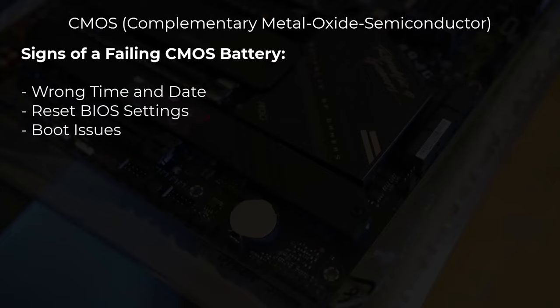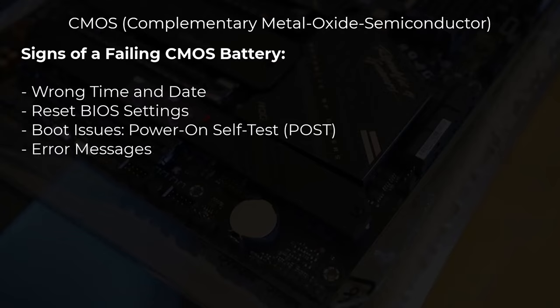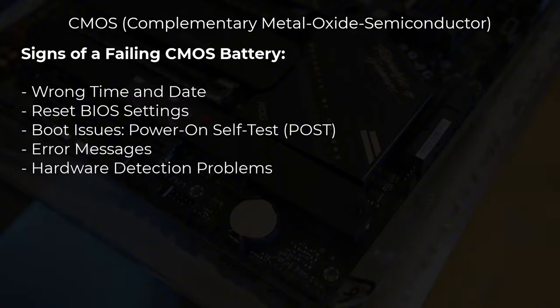Additional symptoms include boot issues — a dead CMOS battery can cause booting problems like failing to pass the Power-On Self-Test (POST) or getting stuck in a boot loop. You might also see error messages related to CMOS or BIOS settings during startup, hardware detection problems where the CMOS struggles to detect certain hardware components, and slow boot times as the BIOS has to reset its settings every time. If you notice any of these problems, it's a good idea to check the CMOS battery.